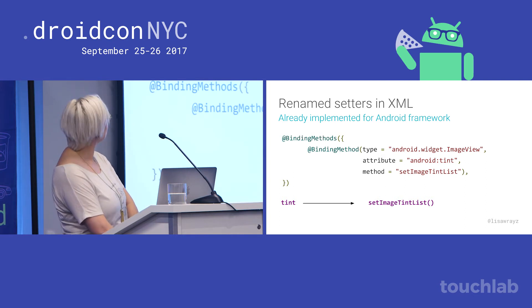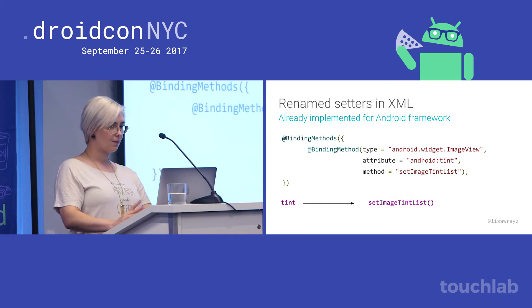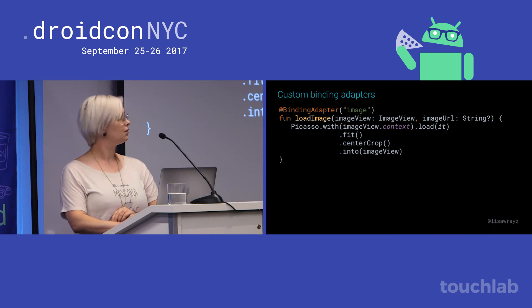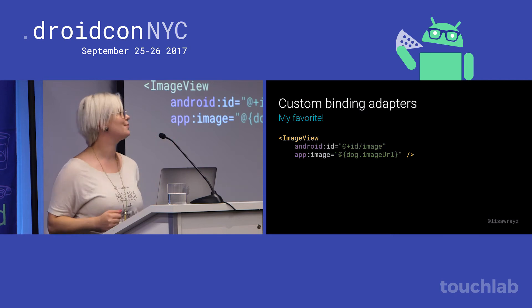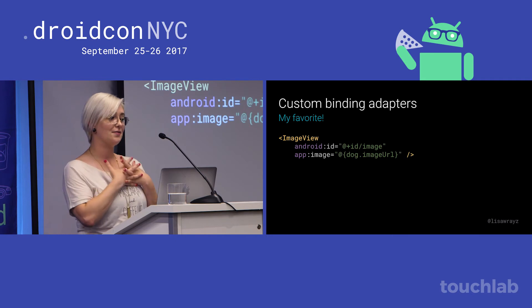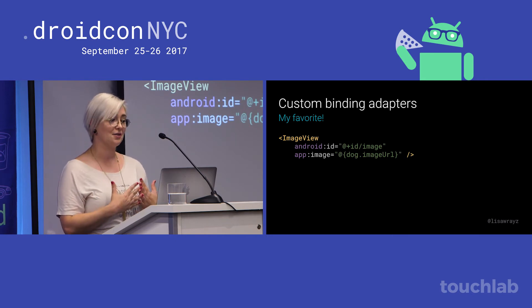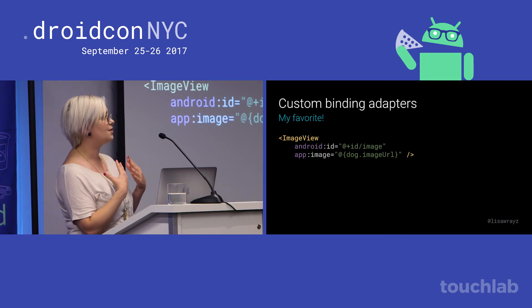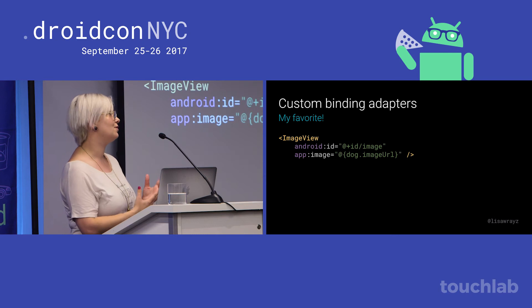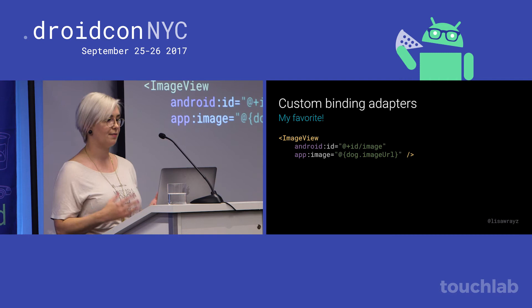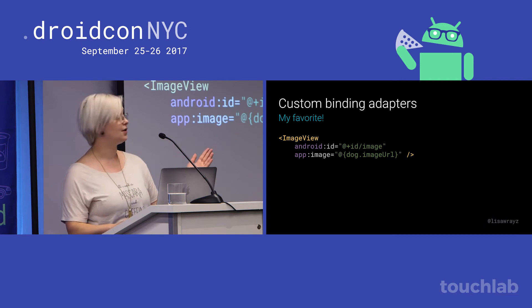Custom binding adapters are my favorites. I was excited for these when they were first announced in 2015, as I was for Kotlin extension functions. It's the ability to fill in any attribute you've ever wanted or thought was missing in the Android framework yourself — you can just make them up and add them. I'm going to use this image attribute as my example. There are two basic ways to do this in Kotlin.